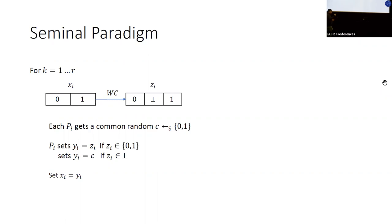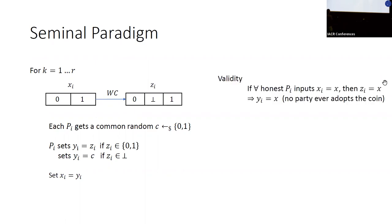The paradigm works as follows: we run weak consensus, jointly flip a coin, and if you don't know what to do — meaning your weak consensus output was bottom — you simply take the coin value. Otherwise, if your output was zero or one, you stick to it. Then we repeat. If all honest parties started with the same input, after weak consensus they all output that bit, no one listens to the coin, and the value propagates throughout all iterations.